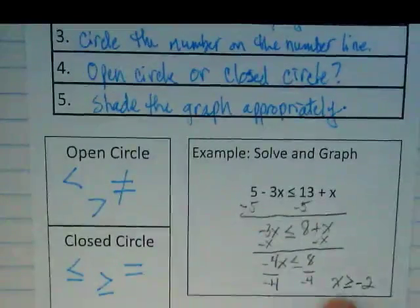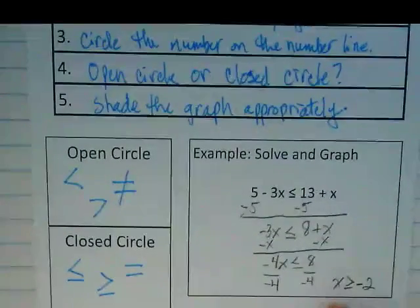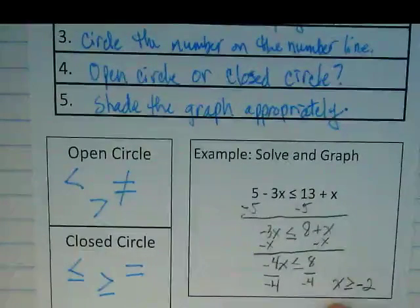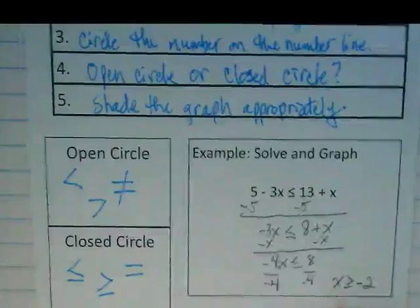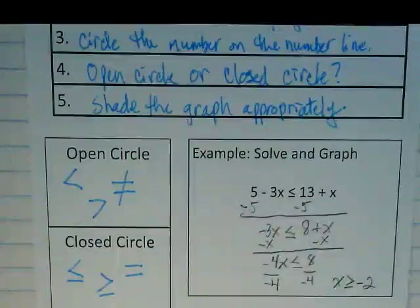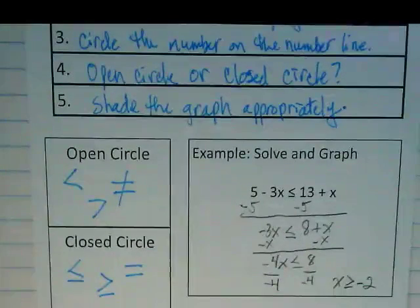So did we get the variable by itself? Yeah. Is the order correct? Yeah. So we don't need to flip it again. We're going to circle the number on the number line. But first, this number line is blank, so we need to fill some numbers in.